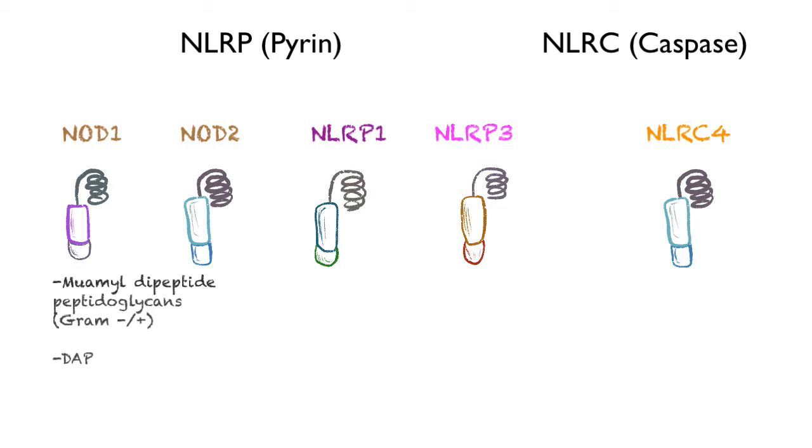NLRP1 senses things like anthrax, the bacterial toxin, but this utilizes something different. It utilizes the ASC-caspase-1 signaling molecule, and that's what we'll be discussing today.